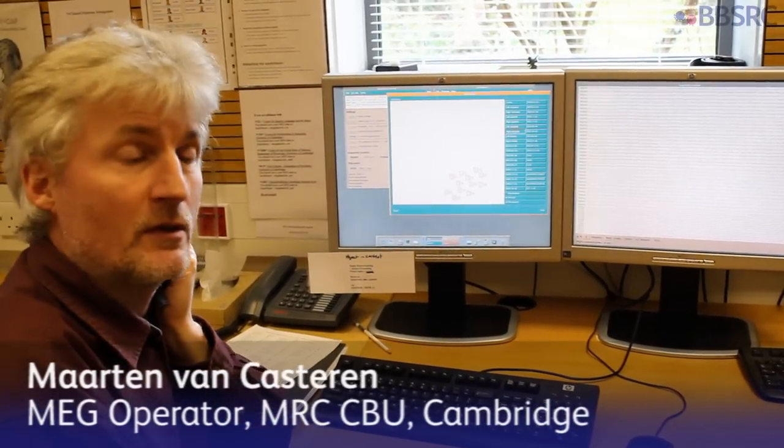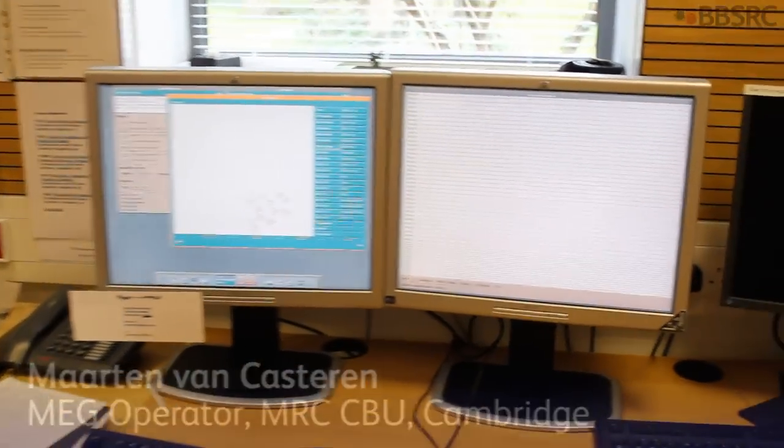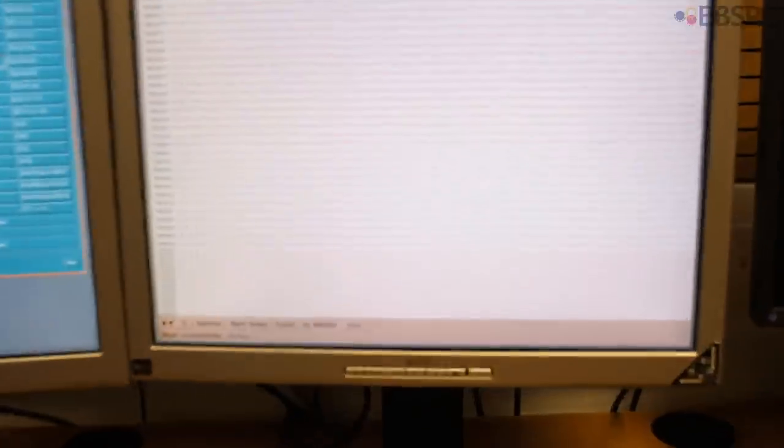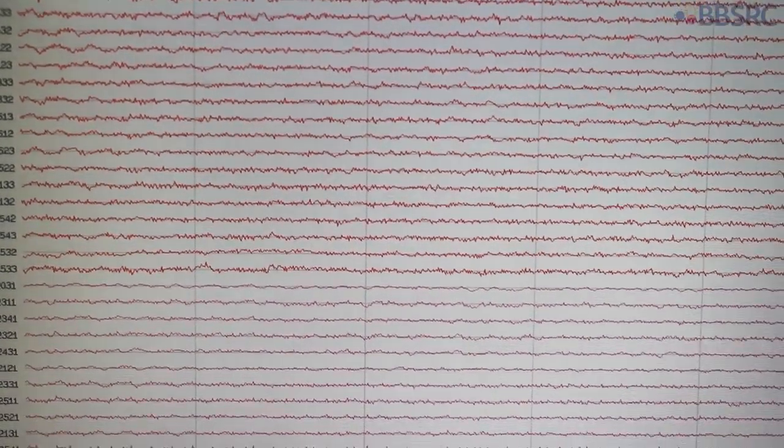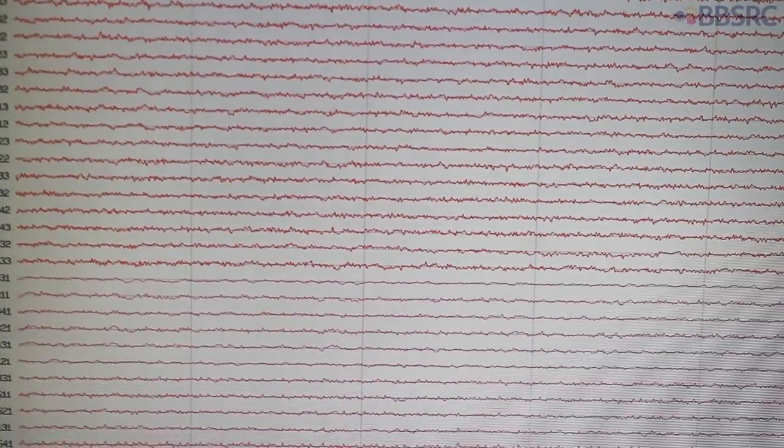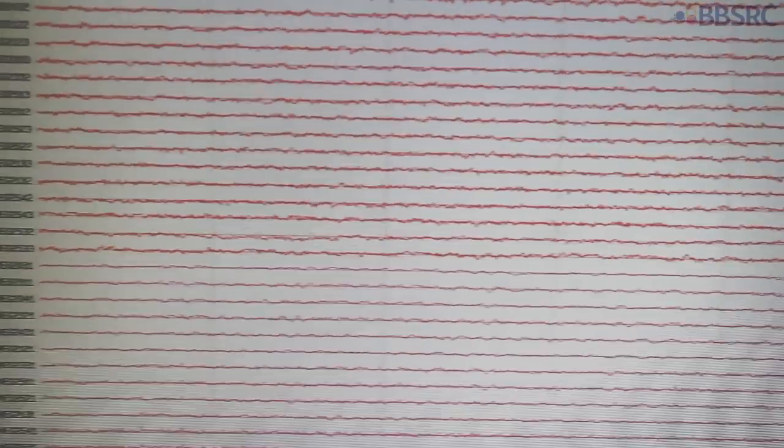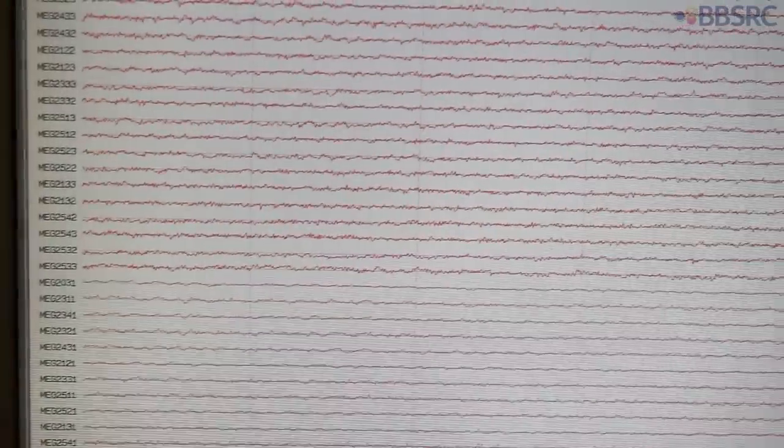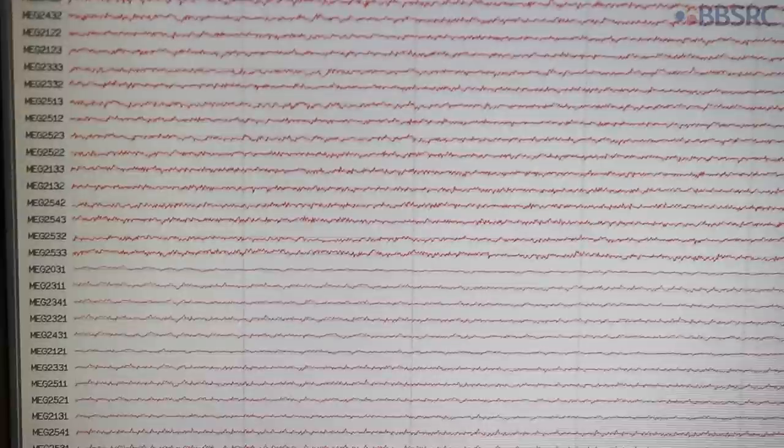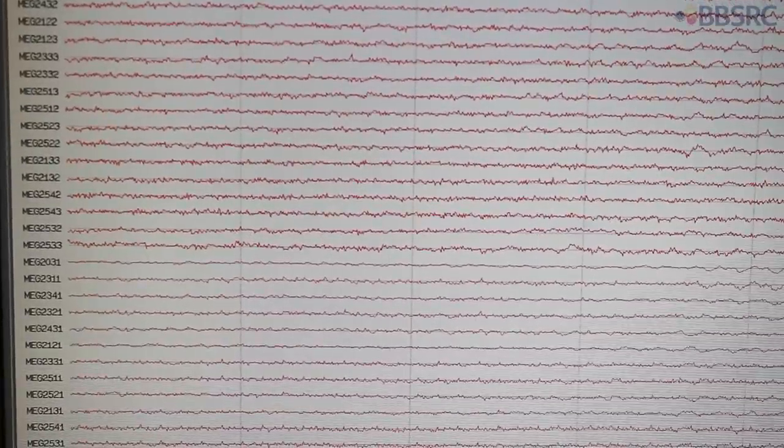That's what it looks like - wavy lines. This shows electrical activity somewhere in the helmet, which only becomes meaningful after extensive data analysis. That's why we do the MRI scan as well, so we can relate it to the brain structures.